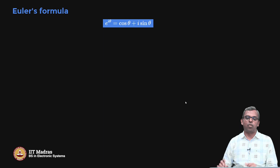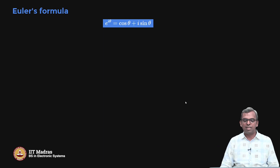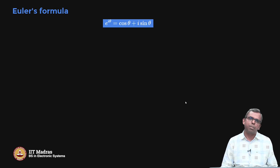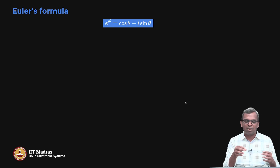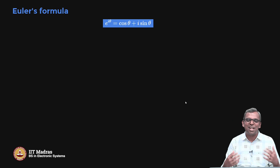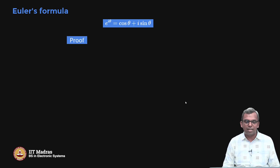Now here comes Euler's formula — a very amazingly wonderful formula. It states that e^(iθ) = cos θ + i sin θ. In the previous discussion we were looking at e^(iy); here I use θ because we know cos θ and sin θ are coming. There is a very simple proof for this.